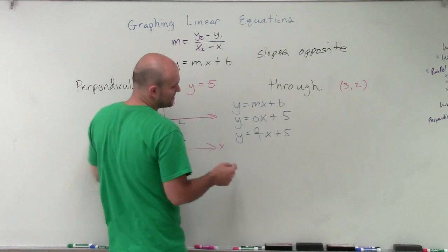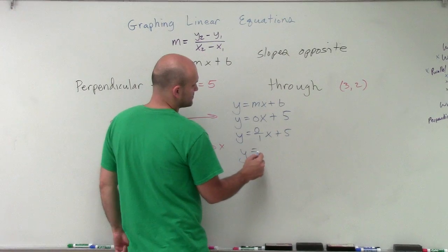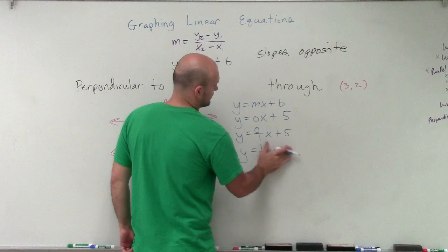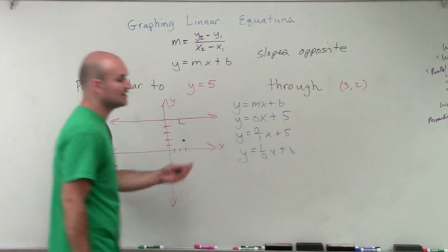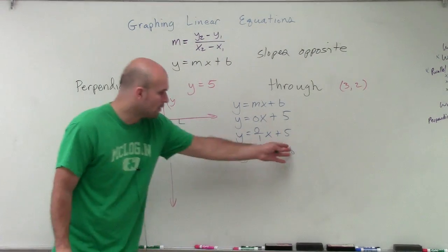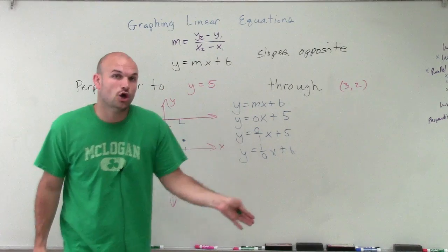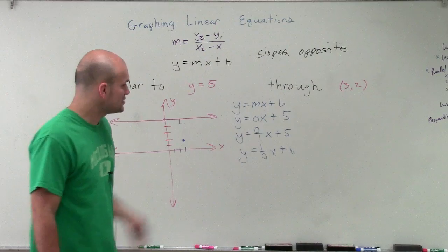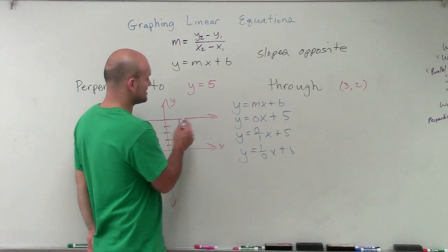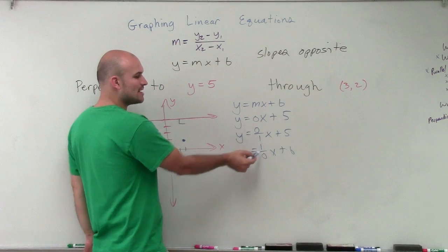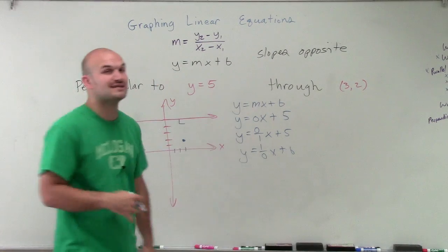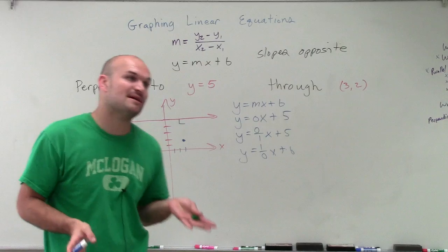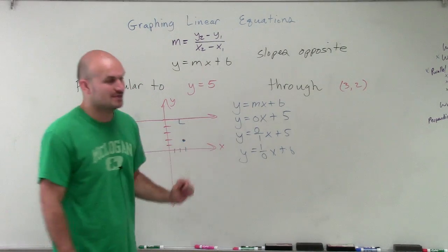However, if I was going to just take a look at the reciprocal, I'd write this as y equals 1 over 0x plus b, right? Because we're not going to know what our new y-intercept is. But we do know that the slopes for perpendicular lines have to be reciprocals of each other. So if I look at the reciprocal of the slope for y equals 5, I automatically notice that I have a 0 on the bottom, which means I have an undefined slope. That doesn't mean I don't have a line. That just means my slope for my new line is going to be undefined.